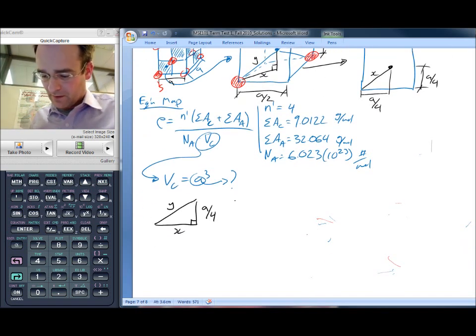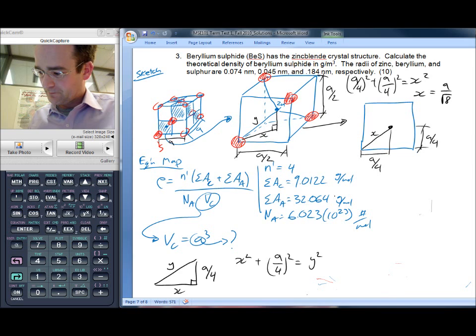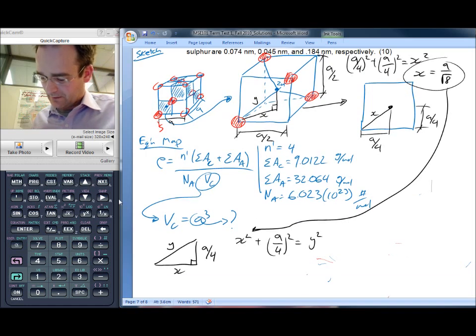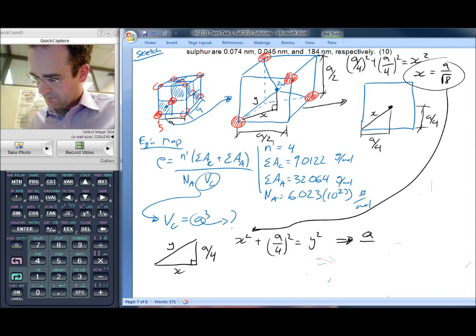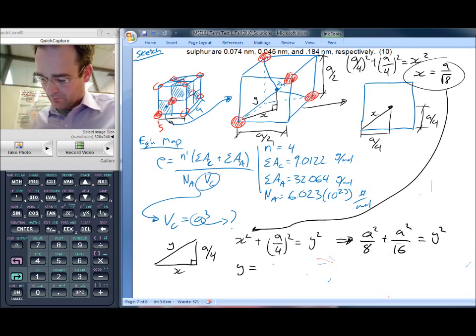So from this, we have that X squared plus A by 4 squared equals Y squared. Substituting in our value for X leads to A squared by 8 plus A squared by 16 equals Y squared, or Y equals root 3 by 4 A.